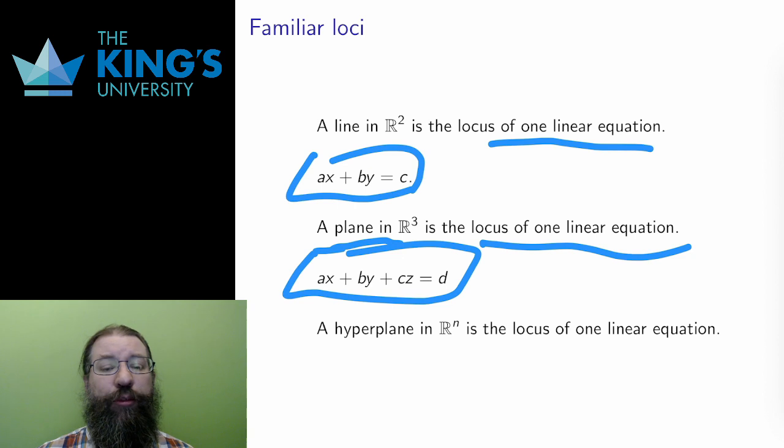And the reason for this comes from dimensions and restrictions. A linear equation is a restriction, so it should drop the dimension. Usually, it drops the dimension by 1. R2 is dimension 2. A line has dimension 1. So, one equation drops the dimension from 2 to 1, giving a line. R3, however, has dimension 3. One equation drops the dimension by 1. Well, that gives a plane.